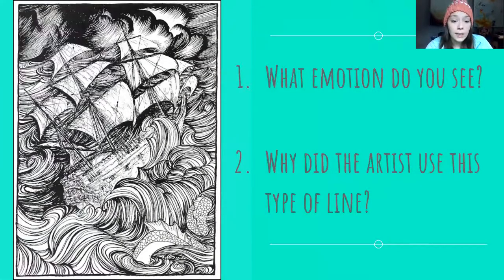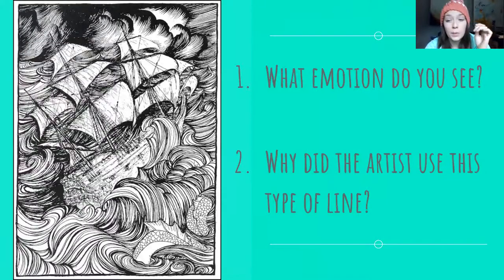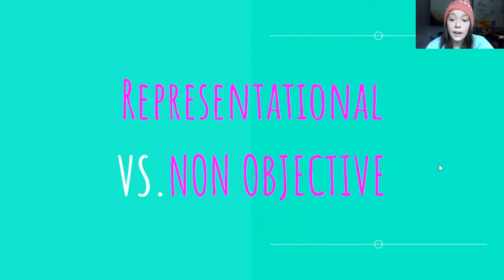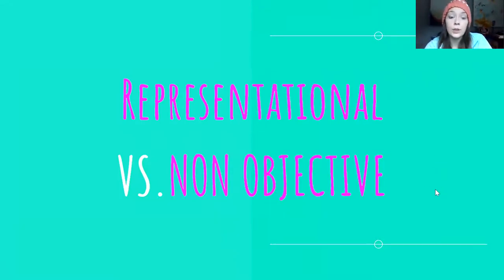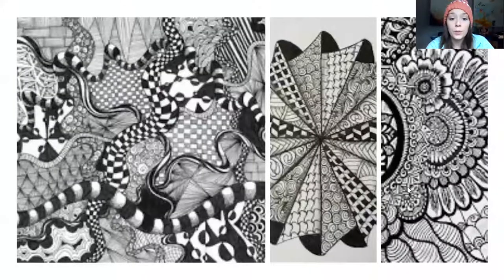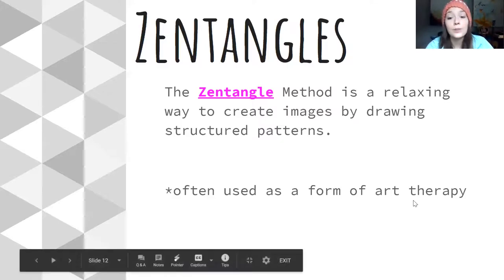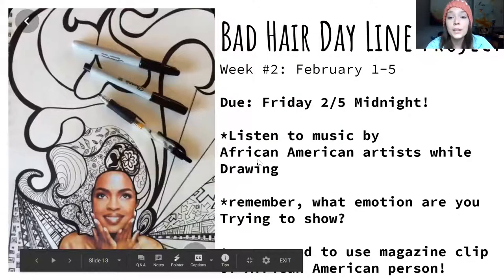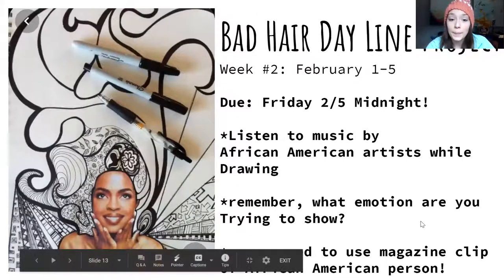Lines can also be used with lots of expressive strokes — think about the emotion that the line is creating. All of those are representational; they show something you recognize. While non-objective artwork is more like zentangles, which is similar to your project this week. That's what we talked about yesterday.